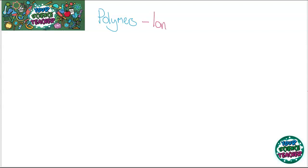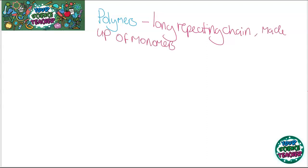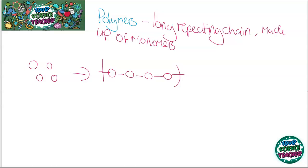First things first, let's look at what a polymer is. A polymer is a long repeating chain and it's made up of monomers — a monomer is a single unit of that chain. If I represent a monomer with a circle and turn it into a chain, you can see what happens during polymerization: those monomers just join together and recreate a repeating unit. We use brackets to show where the chain stops and repeats, and a number to show how many repeating units we have.